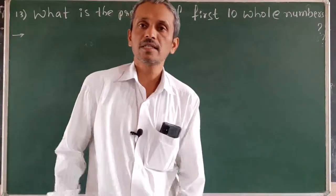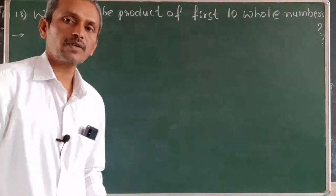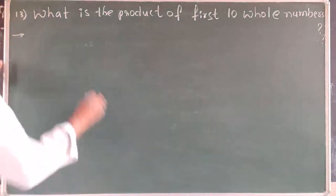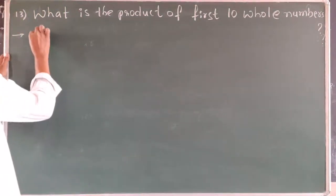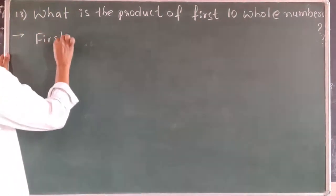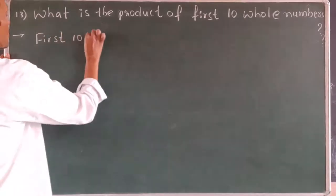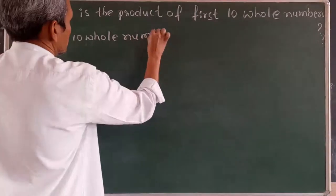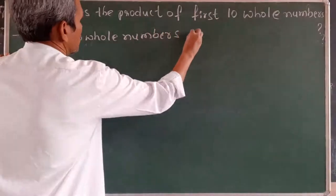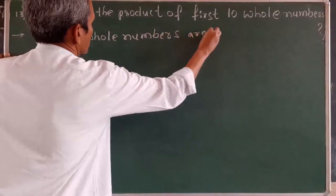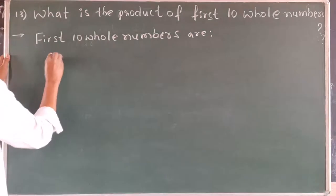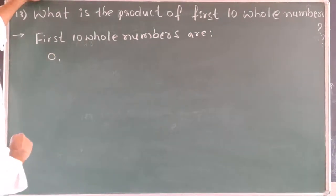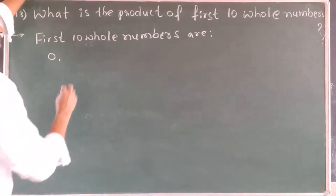Whole numbers, natural numbers, even numbers, odd numbers — we have already learned these in the previous chapter. Now we will recall. Whole numbers: the set of natural numbers including 0 is known as whole numbers.